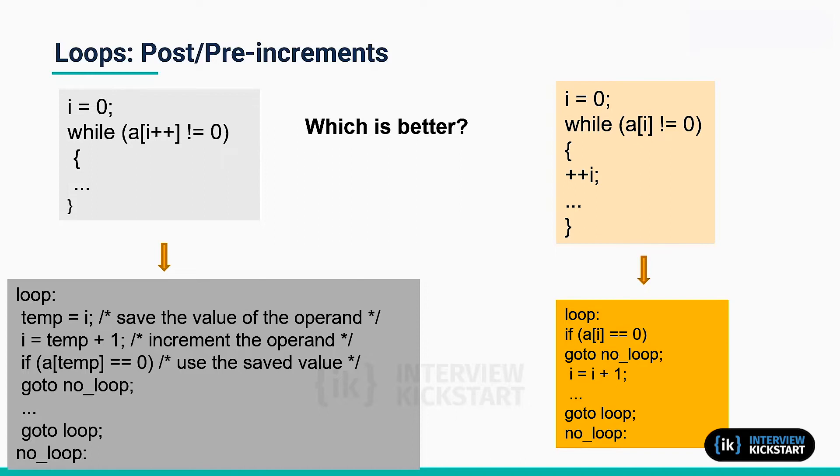Here is a loop where the termination condition is a bit complex. You have an array being accessed and the index of the array is being post-incremented, and when the value of the array becomes zero, the loop terminates.